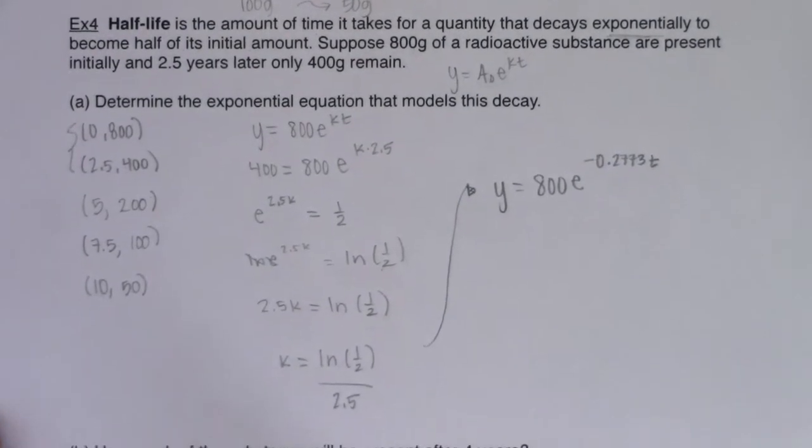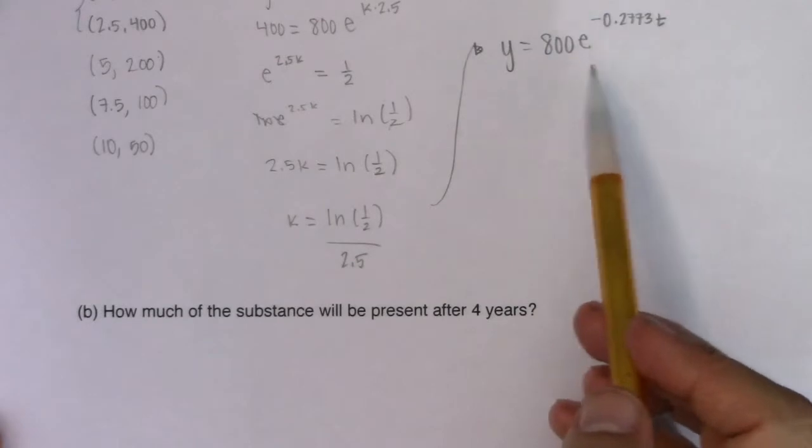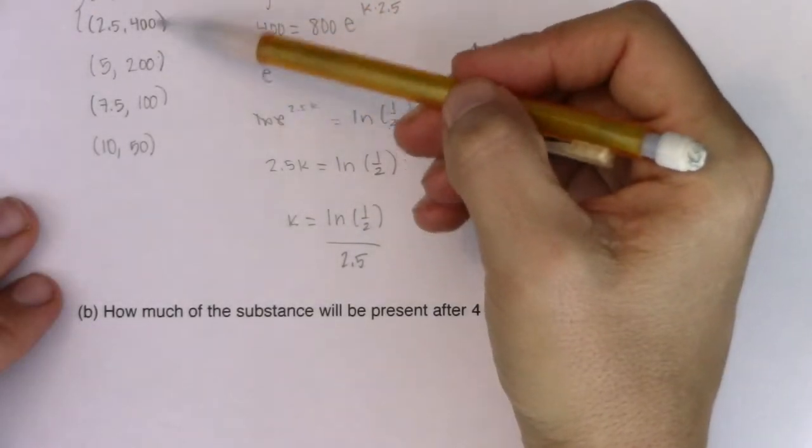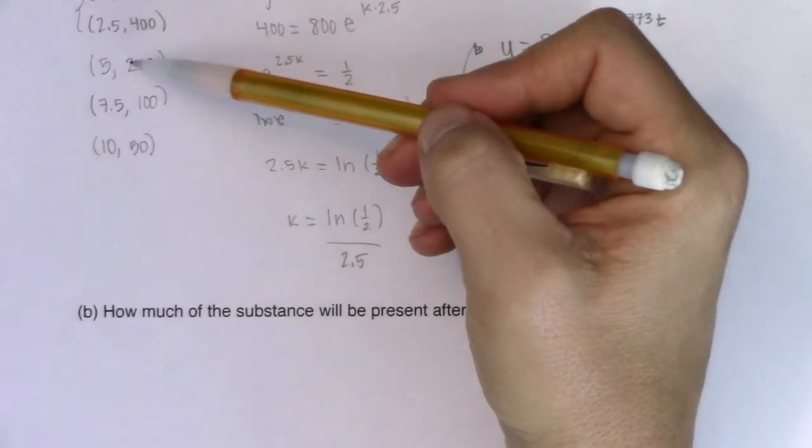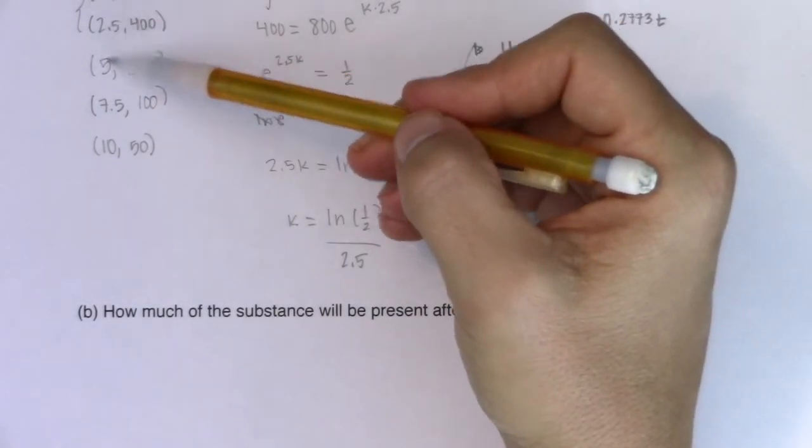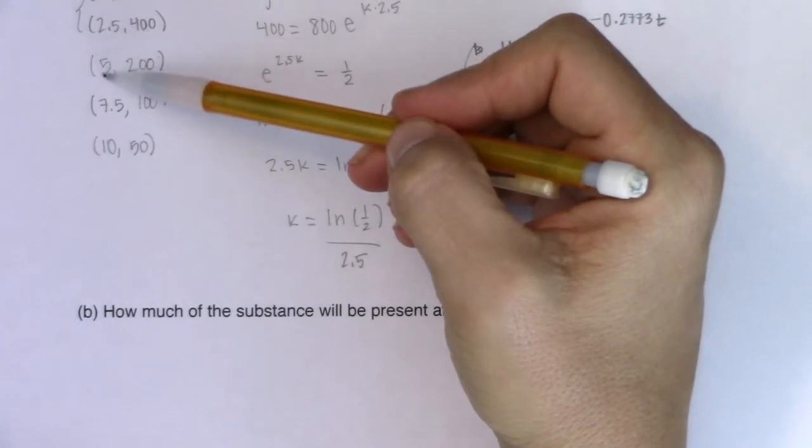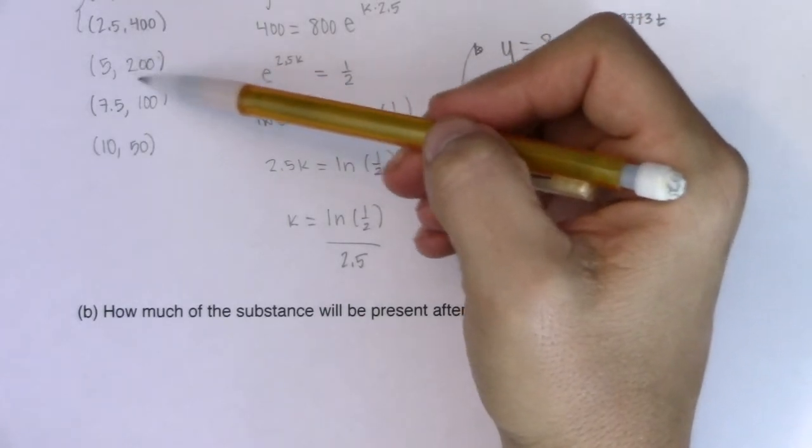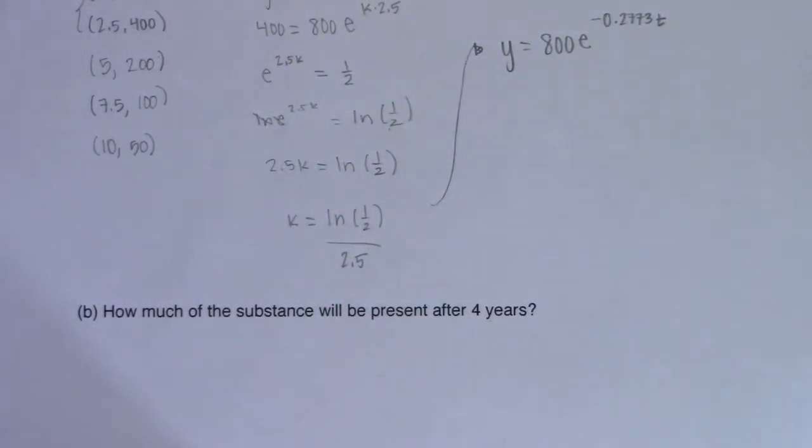Let me go ahead and scooch this up so we can see the second part of the problem. How much of the substance will be present after four years? So if we're talking four years, I want to go back to my initial data values. We knew two and a half years in, I would have 400 grams remaining. We also knew that from two and a half to five years, my substance decays from 400 grams to 200 grams, and four is closer to five than it is to 2.5. So my guess would be like 250 would be left after four years, somewhere around 250 is what I should be expecting.